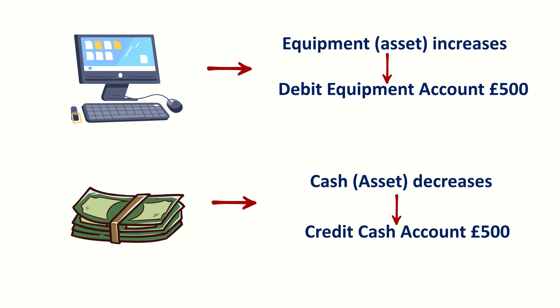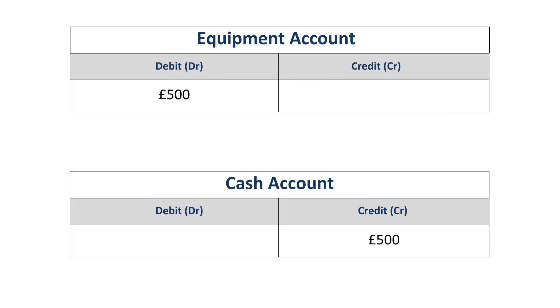But at the same time, the business is paying cash. That means the cash the business owns is going down. When an asset decreases, we credit that account. So we record credit cash account £500, because the cash asset has reduced. Notice how one side increases and the other decreases, and the two amounts are the same — that's the key rule in double-entry bookkeeping.